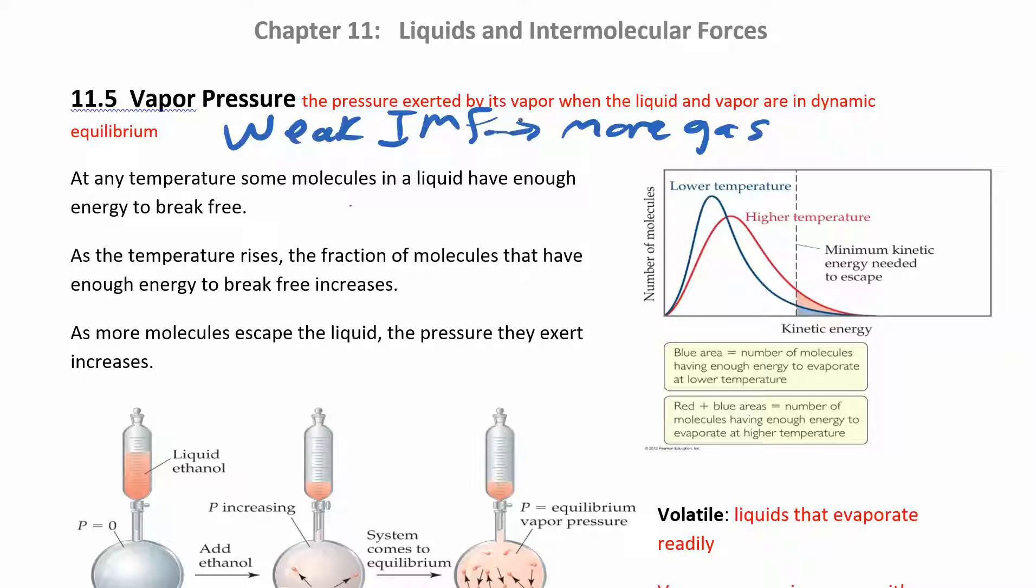Because you don't have a lot of strong forces holding them together in the liquid phase. The stronger the intermolecular forces, the more liquid you have. It's harder for them to break those forces to go into the gas phase. So the weaker the intermolecular forces, the more gas and therefore the higher the vapor pressure.